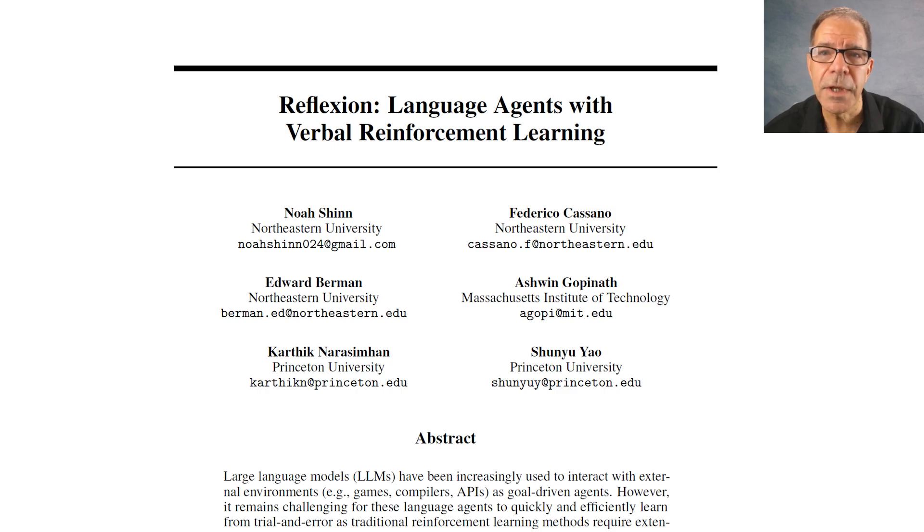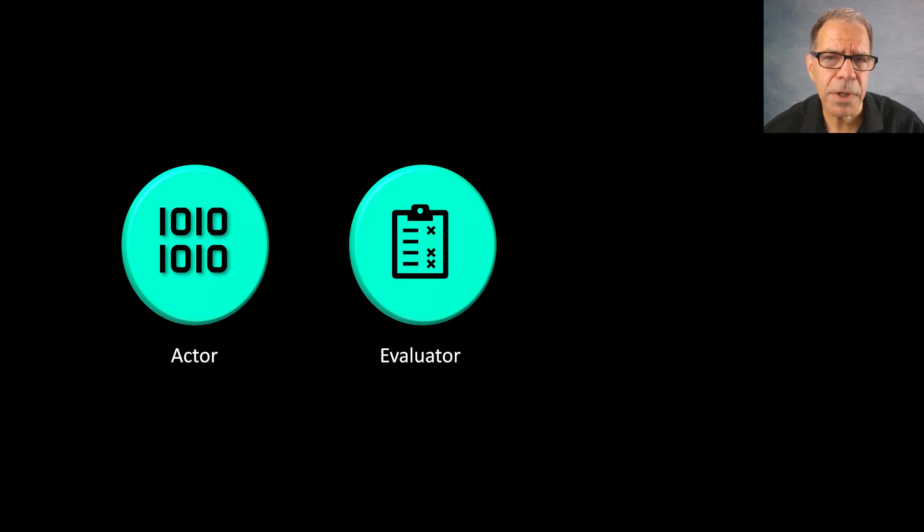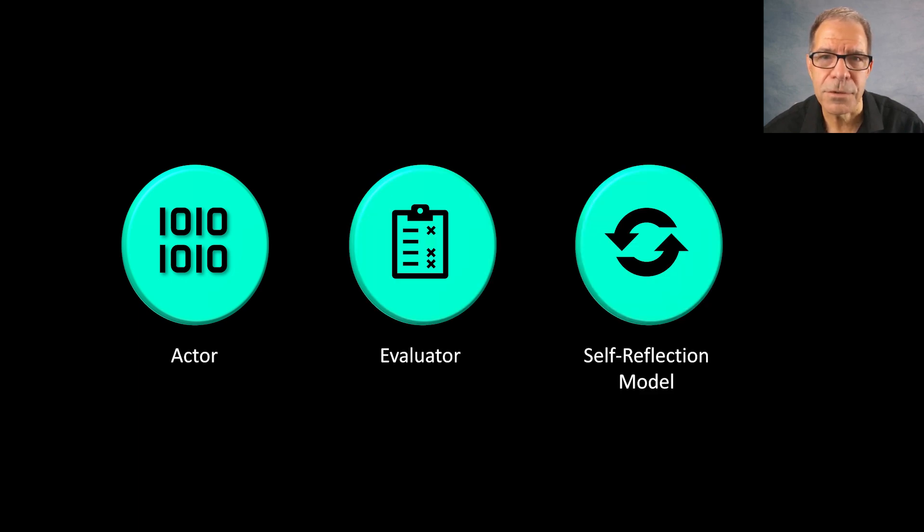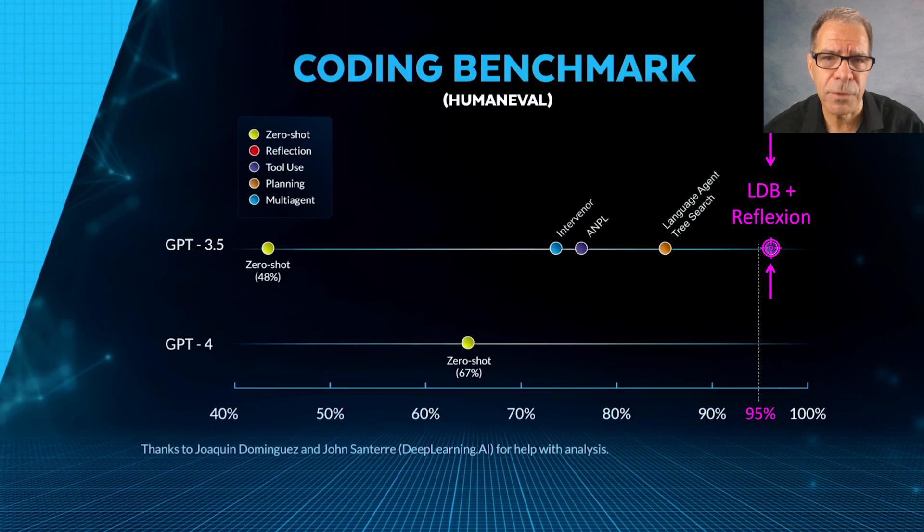For this, three agents collaborate: an actor, an evaluator, and a self-reflection model that generates actionable feedback. And as we saw, that was the best performing framework that the deep learning team identified for GPT-3.5.